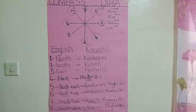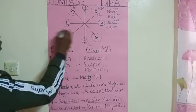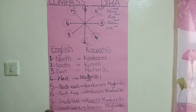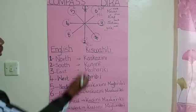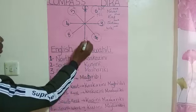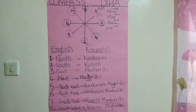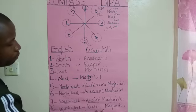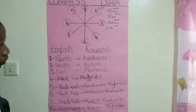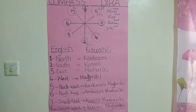We are just summarizing to the last point, which is number eight. Our number eight: we say Southwest. Southwest in Kiswahili is 'kusini magharibi.' Kusini magharibi. Now as a summary, I want us to read all together and try not only to memorize, but to understand.